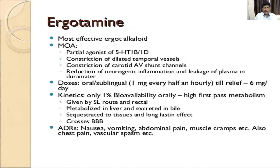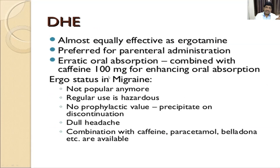Ergotamine is an ergot alkaloid and is an agonist of 5-HT1B and 1D receptors. It causes constriction of dilated temporal vessels — the mechanism is based on the dilatation theory. There is constriction of carotid AV shunt channels, reduction of neurogenic inflammation, and leakage of plasma in the zero pattern. Dihydroergotamine is equally effective as ergotamine and preferred for parenteral administration; it is not much popular nowadays because safer drugs exist, it has no prophylactic value, and may have adverse effects. It can be combined with caffeine, paracetamol, and caffeine combinations.